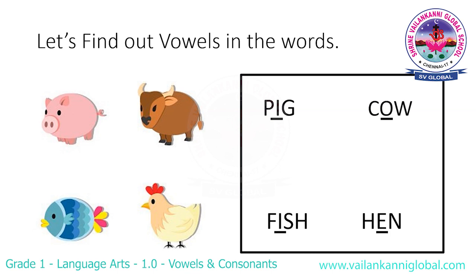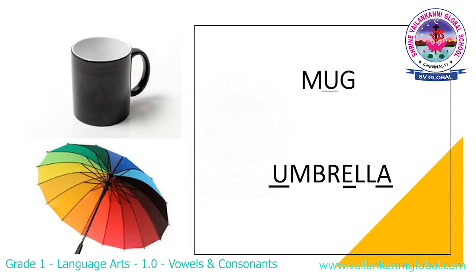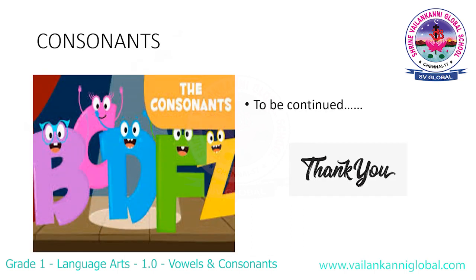In 'mug' (M-U-G), U is a vowel. In 'umbrella' (U-M-B-R-E-L-L-A), U, E, and A are vowels. A is a consonant — we will see that in the next slide. Thank you.